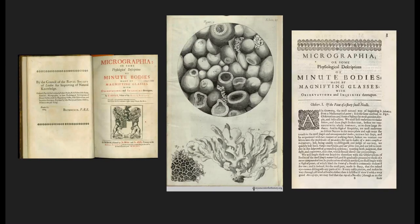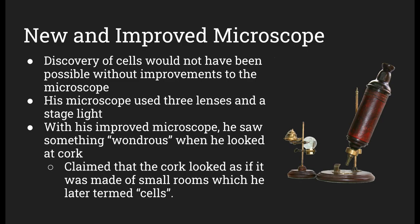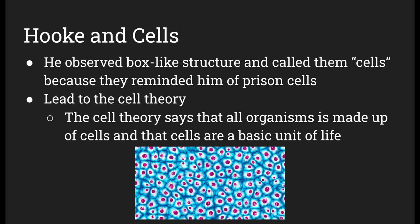Here are more images of the pages inside Micrographia. As noted earlier, he didn't make the microscope, he improved it. The discovery of cells would not have been possible without his improvements to the microscope. His modified microscope used three lenses and had a stage light. With this improved microscope, he saw something he called wondrous when he looked at cork, claiming it looked as if it was made of small rooms, which he later termed cells.